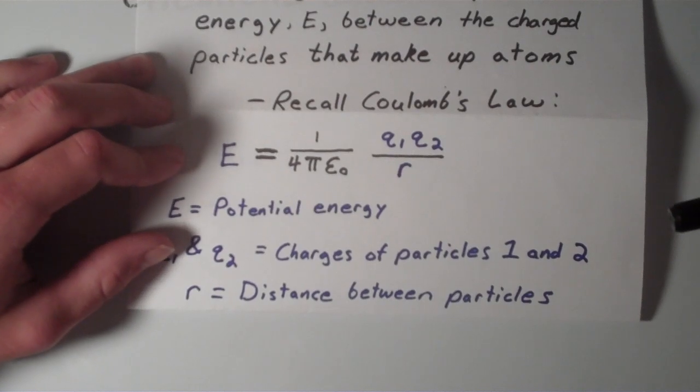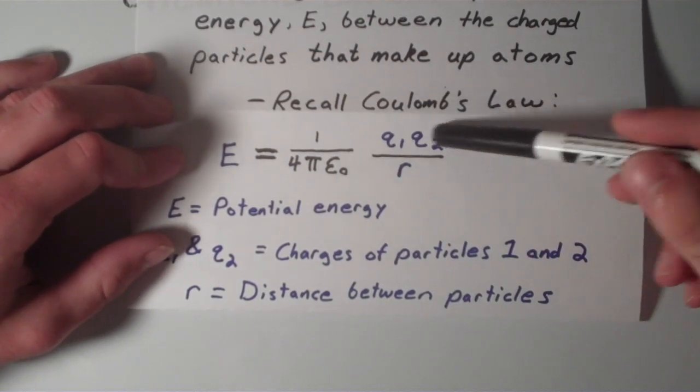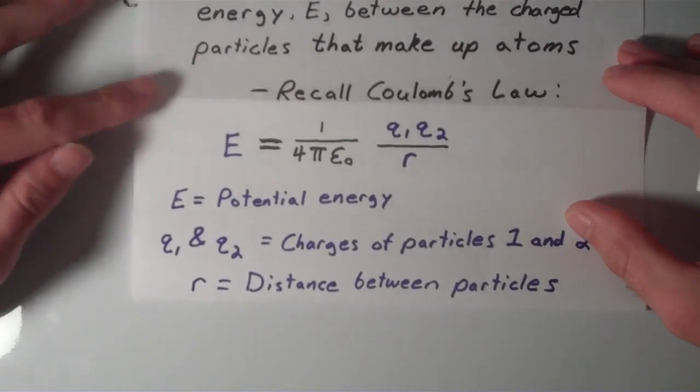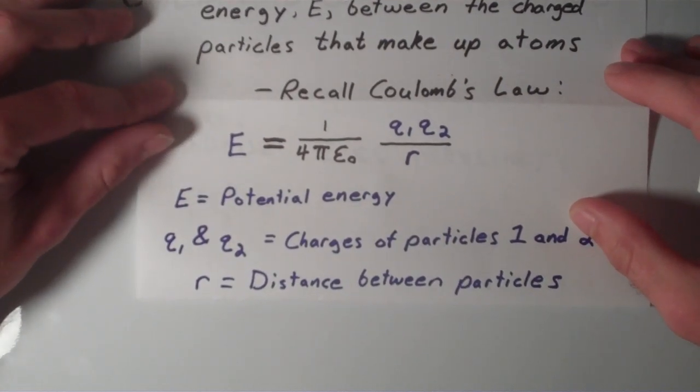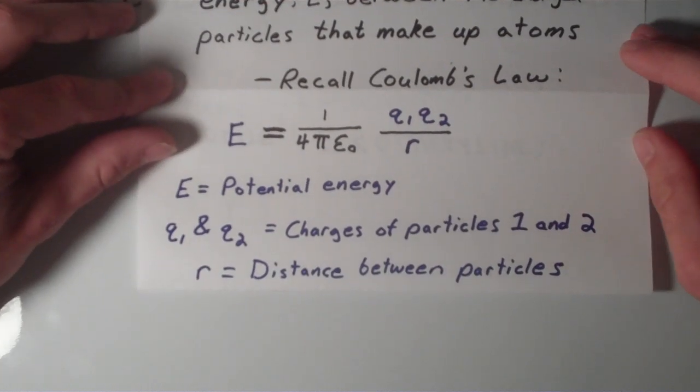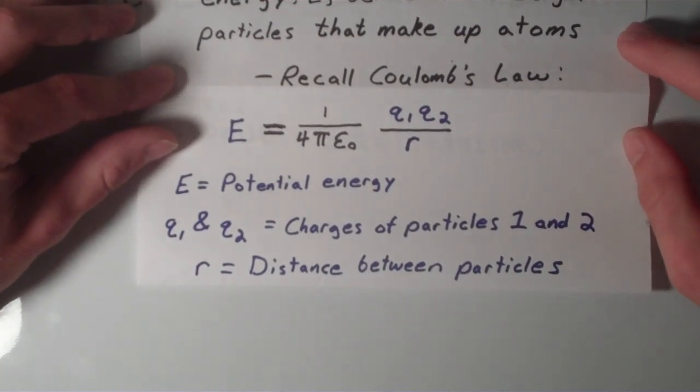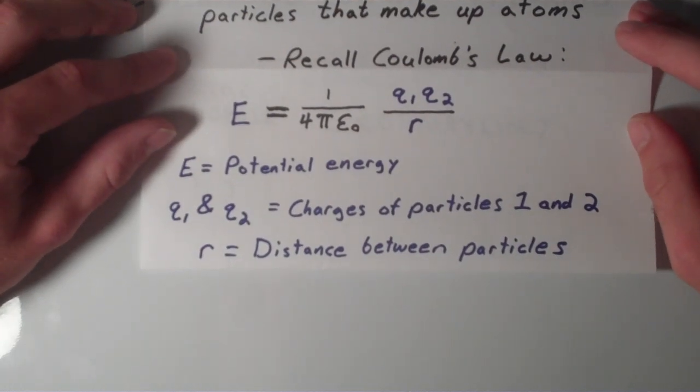The important part of the right hand side of the equation is the Q1 times Q2 over R. So, E, as we already said, is the total potential energy of the two particles. Q1 and Q2 are the respective charges of particles one and two, and R is the distance between those two particles.